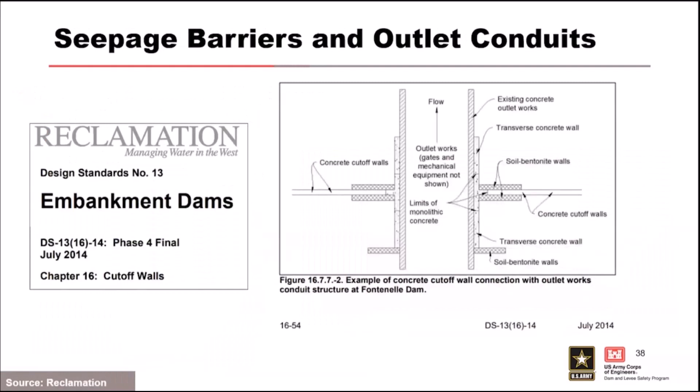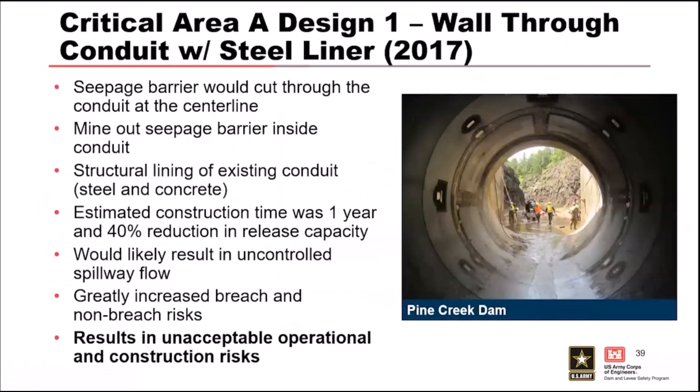Let's talk about critical area A — seepage barriers near outlet conduits and obstructions. The Bureau of Reclamation has guidance on this topic. Generally, you install transverse panels parallel to the outlet conduit, or encasement, and then install your seepage barrier. Looking at this, we felt it was difficult and posed some risk. We obtained some consultants to get a feel for what would be better. One thought process was: if you bulkhead the conduit at the seepage barrier alignment, fill it with flowable fill, fully sever the conduit, install the seepage barrier, mine the seepage barrier back out, and then slip-line the conduit, that would be effective.